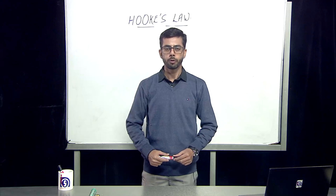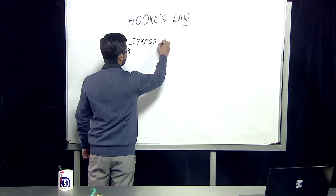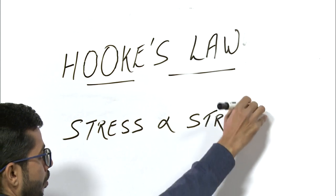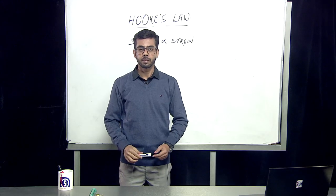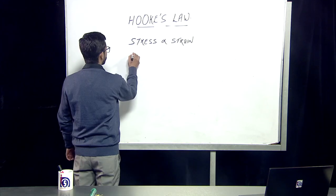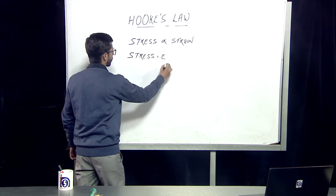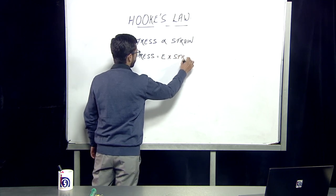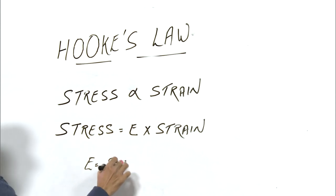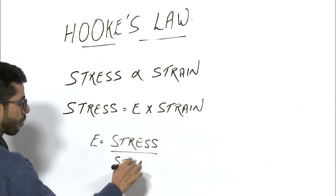Now we can go for the mathematical expression of Hooke's law. From Hooke's law, the stress is directly proportional to the strain. The stress is not equal to the strain, but a proportionality exists. When we remove the proportionality, it is given by the product of a constant value known as the modulus of elasticity. The ratio of stress to strain gives you the value of modulus of elasticity.